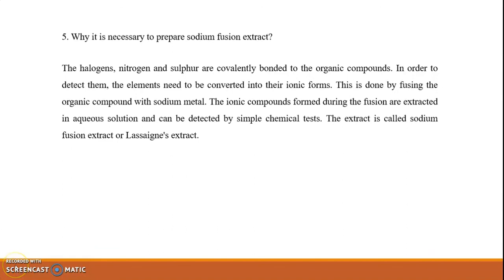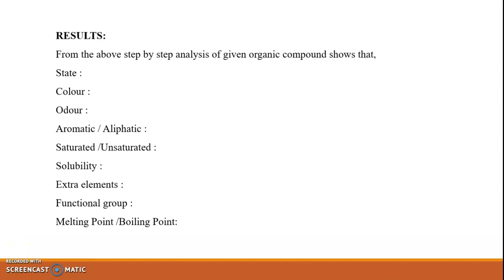Upon completion of all tests, the format for reporting results of the investigation of a given unknown organic compound includes: state, color, odor, aromaticity/aliphaticity; whether the compound is saturated or unsaturated; solubility in different organic solvents; which extra elements are present (by sodium fusion extract); which functional group is present and which test confirms it; and finally the physical constant — melting point or boiling point. Thank you.